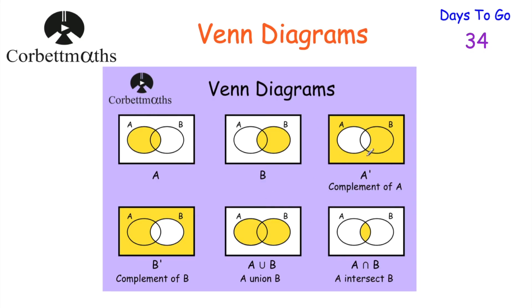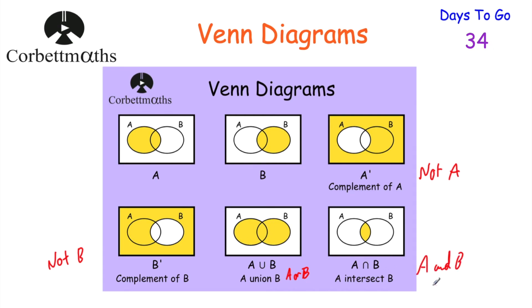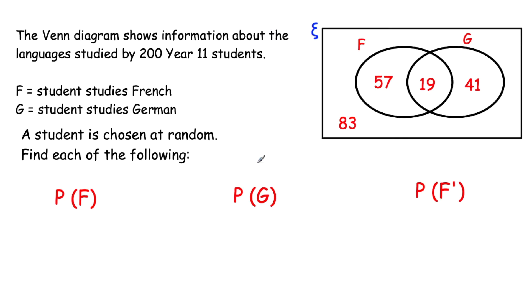To summarise the notation: A' is the complement of A (not A); B' is the complement of B (not B); A∪B is A union B — A or B; A∩B is A intersect B — A and B, the overlap. Now let's look at some questions using this notation.